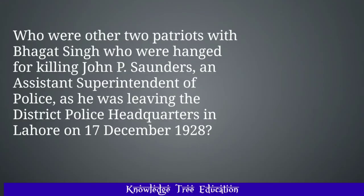Who were the other two patriots with Bhagat Singh who were hanged for killing John P. Saunders, an Assistant Superintendent of Police, as he was leaving the district police headquarters in Lahore on 17th December 1928? The answer is Shivaram Rajguru and Sukhdev Thapar.